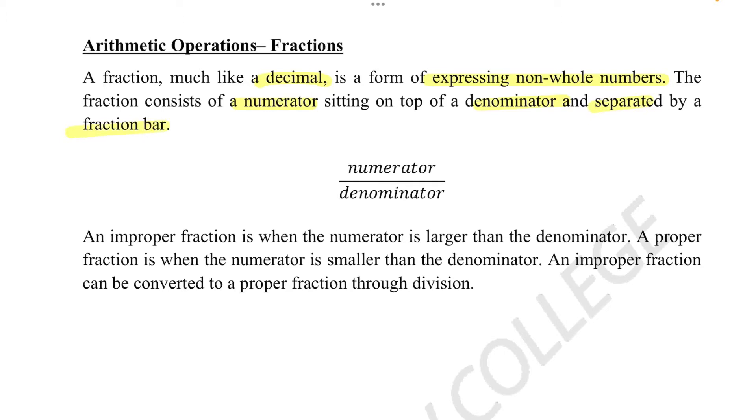As you can see, the numerator is on top and the denominator is on the bottom. An improper fraction is when the numerator is larger than the denominator. A proper fraction is when the numerator is smaller than the denominator. An improper fraction can be converted to a proper fraction through division.